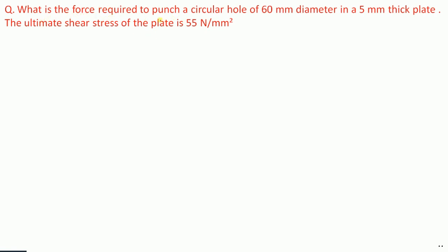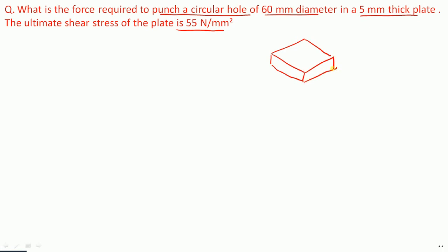What is the force required to punch a circular hole of 60 mm diameter in a 5 mm thick plate? The ultimate shear stress of the plate is 55 N per millimeter square. We have a plate of 5 mm thickness, and we want to punch a hole of 60 mm diameter.